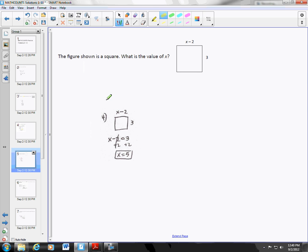Number 4, we have a square. Now you should know that the sides of a square are equal. So all we have to do is set 3 equal to x minus 2. And then you balance: the opposite of minus 2 is plus 2, so x equals 5. So 5 minus 2 is 3, so the side is, x would be 5.